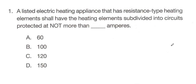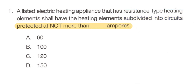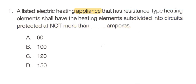Next, we're going to look at the heating elements being subdivided into circuits protected at not more than blank amperes. There are no further key words beyond this — it's really the whole ending of the question, giving two details: the heating elements are going to be subdivided, and those subdivided circuits are going to be protected by not more than blank amps. So looking at this question as a whole, my instinct would tell me to look at appliances.